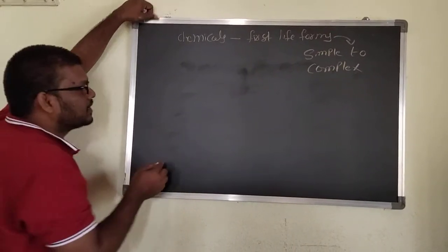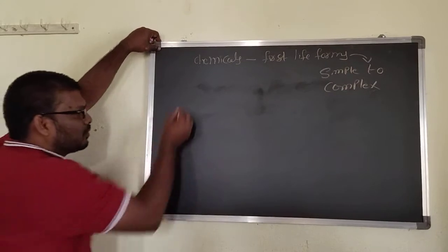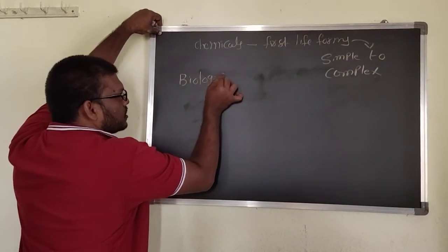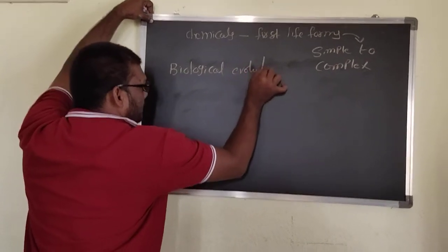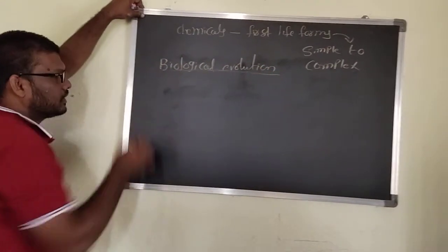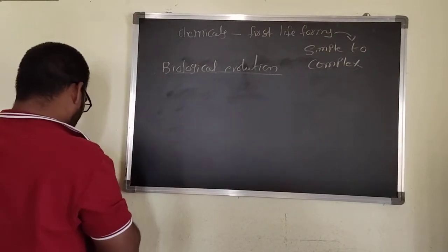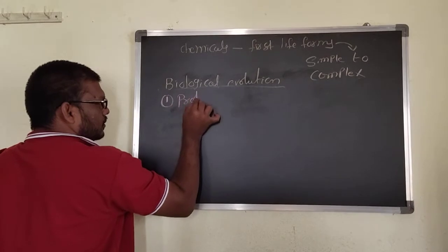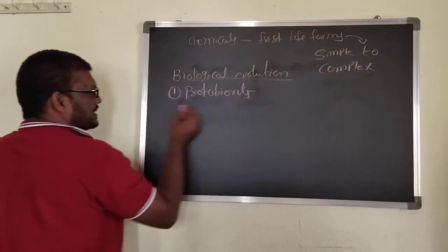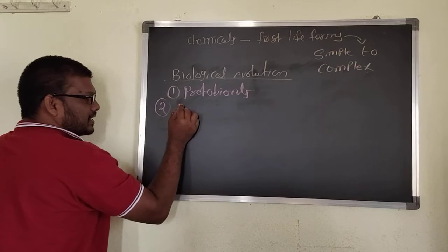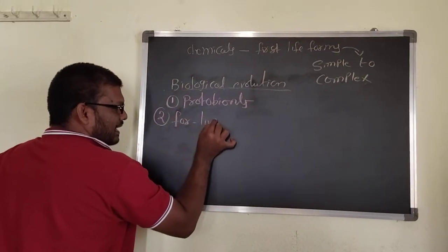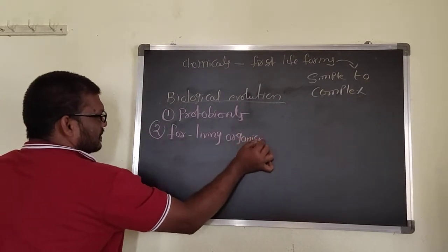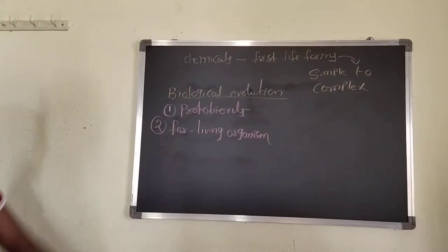Here, first, how life is formed — that is regarding biological evolution. In biological evolution, the first one is the formation of protobionts, and the second one is the formation of living organisms.